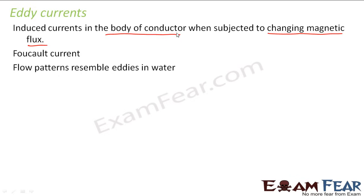Unlike rectangular or circular loops we discussed before, if you have a solid conductor — for example, a circular metallic plate — and that plate is subjected to a changing magnetic field, then due to the change in flux, current gets induced in the body of the conductor. These currents are in the pattern of eddies, which is why they are called eddy currents.